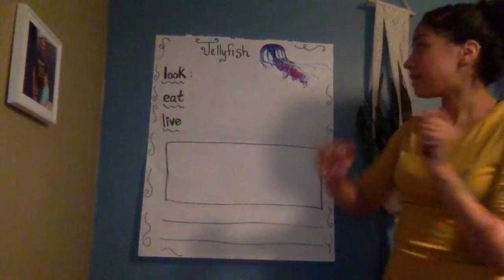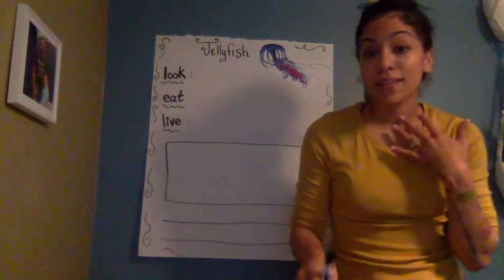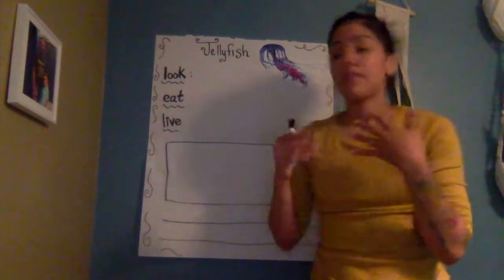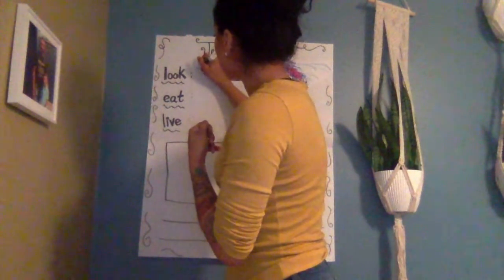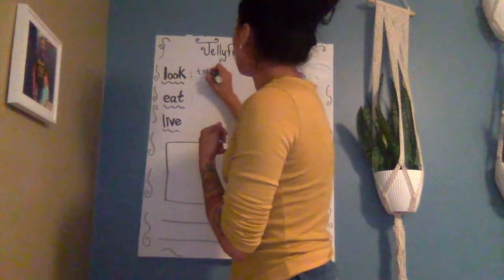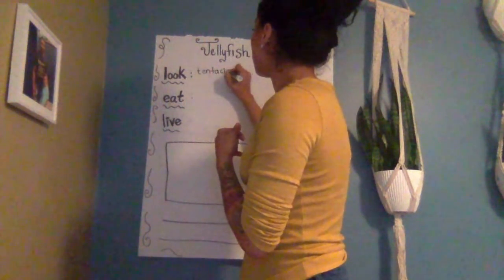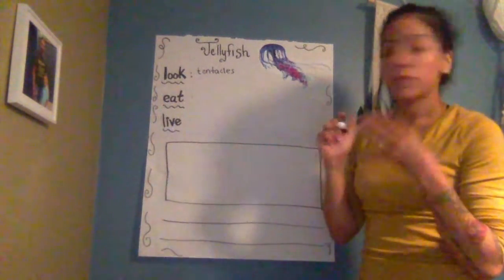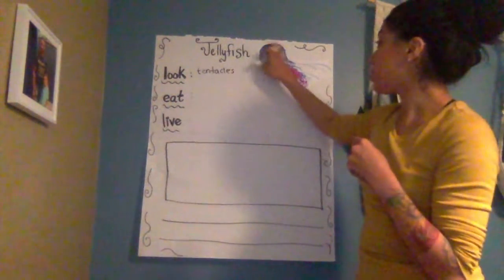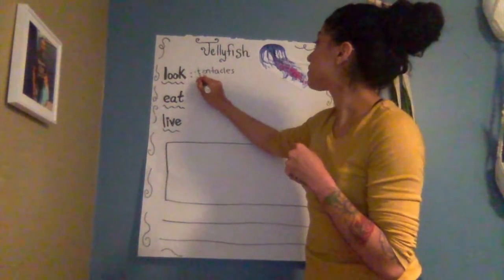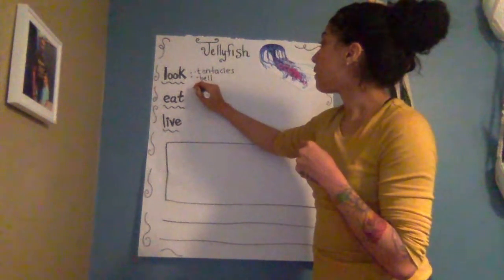The first thing we have to do is write what it looks like, what it eats, and where it lives. Do you remember some of the things in the book about what a jellyfish has? Do you remember what those long wiggly lines are called? Yeah — tentacles! So I'm going to write 'they have tentacles.' What else do they have? They have something called a bell — remember, the top of the jellyfish is called a bell — so I'm going to write 'tentacles' and 'a bell.'